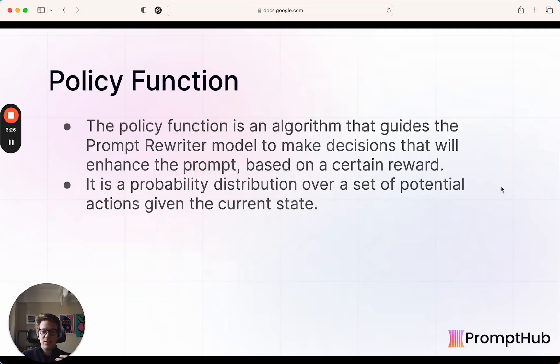More under the hood of how this process works is the big component is the policy function. And a policy function is just an algorithm that guides the rewriter model to make decisions that will enhance the prompt based on whatever reward it's trying to optimize. So it's basically looking at all the stuff it could do. It could add tokens, remove tokens, alter tokens. There's just a couple of potential actions it could take. And the policy function helps it decide which one it should take, which one has the highest probability of generating more rewards based on historical runs.